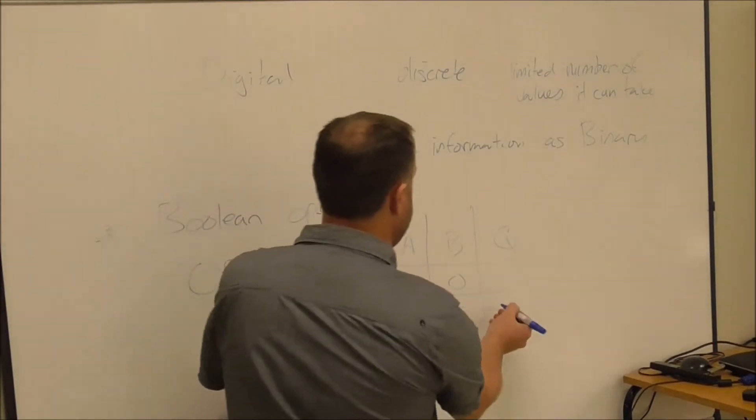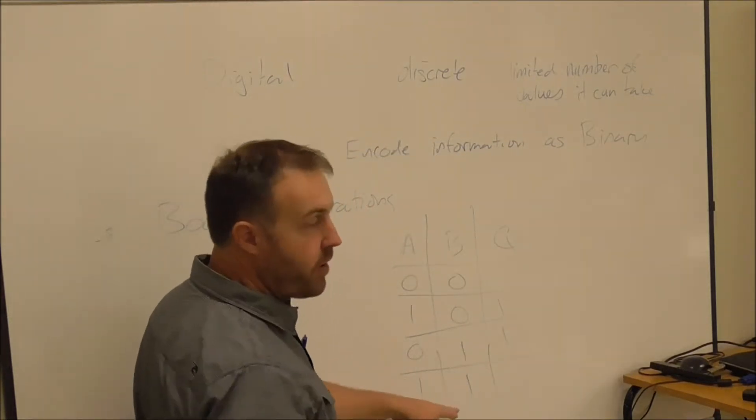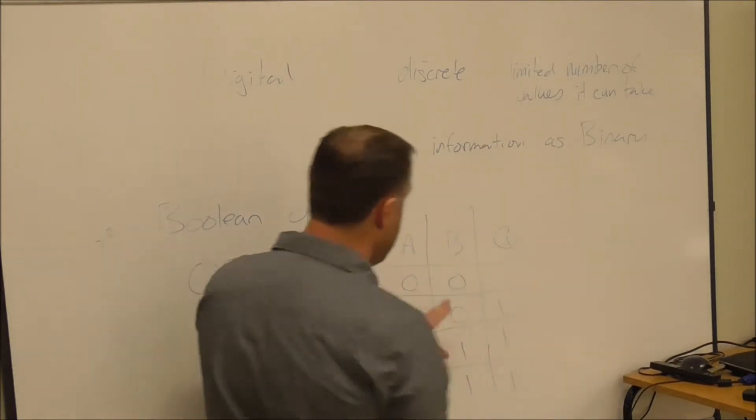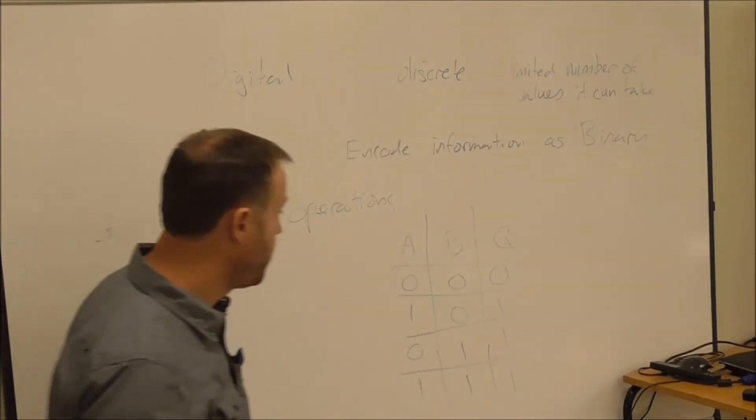That one's true, so the output's true. That one's true, so the output's true. Well, both of those are true, so the output is still true. But neither of these are true, so the output must not be.